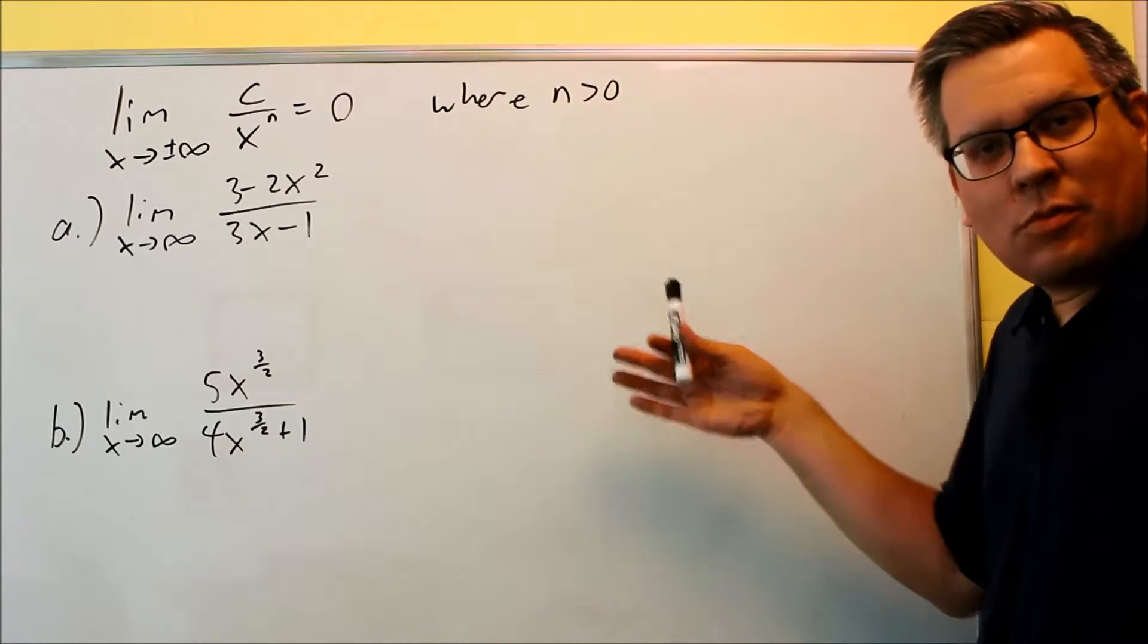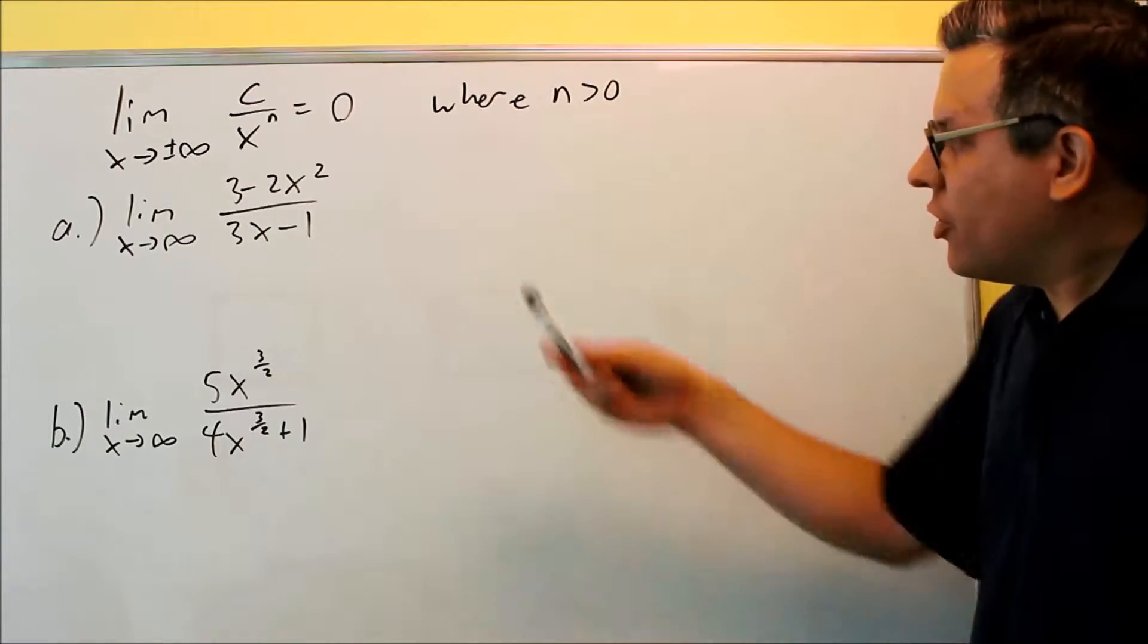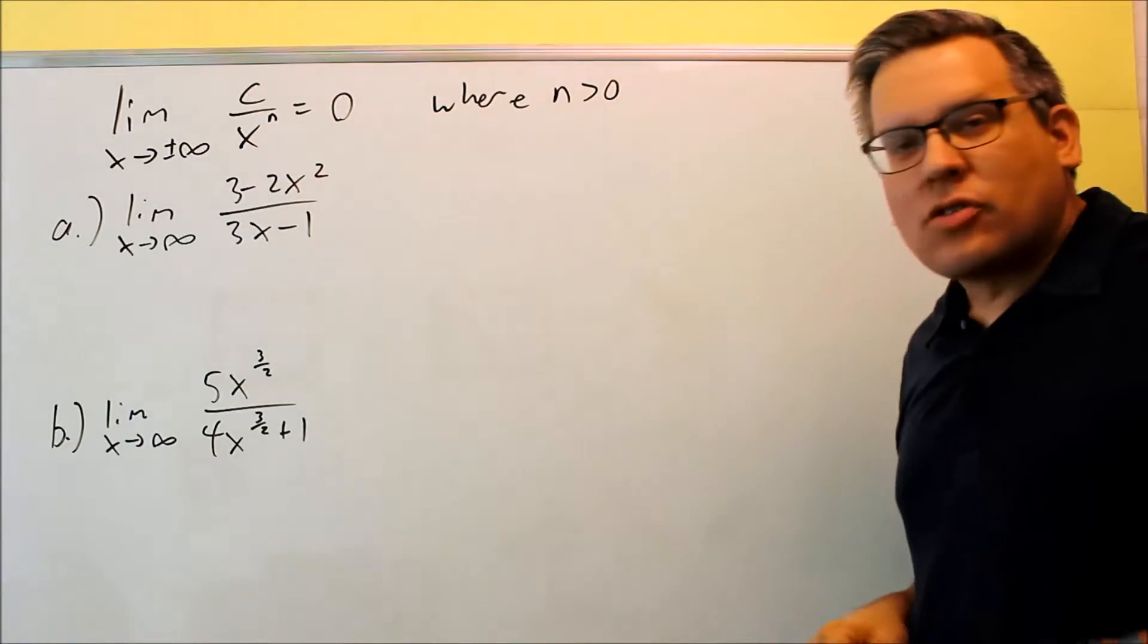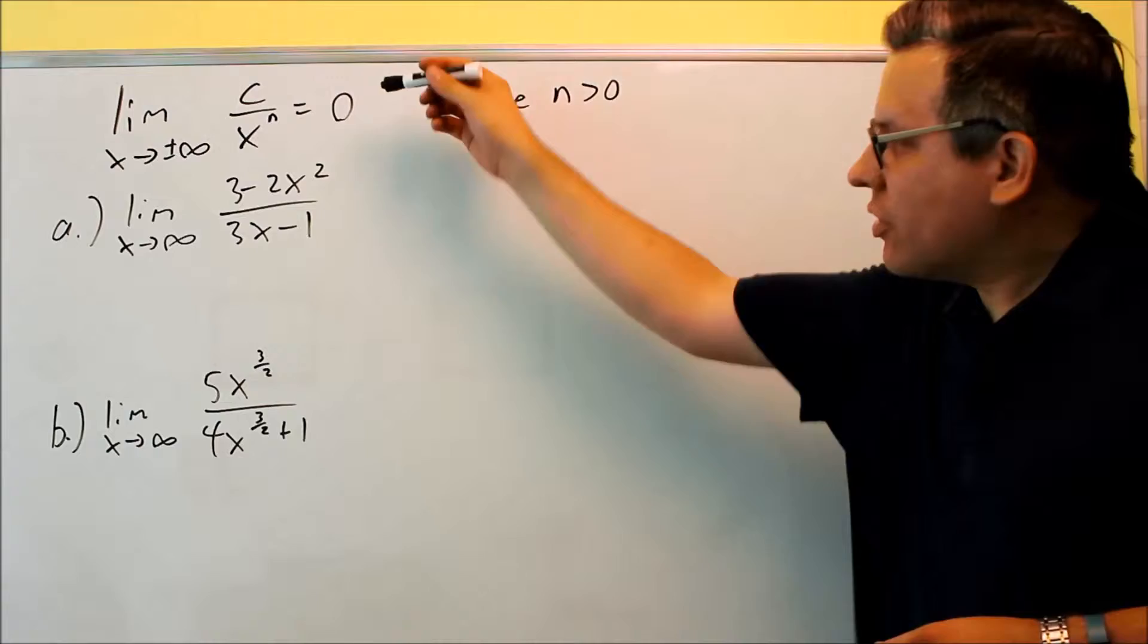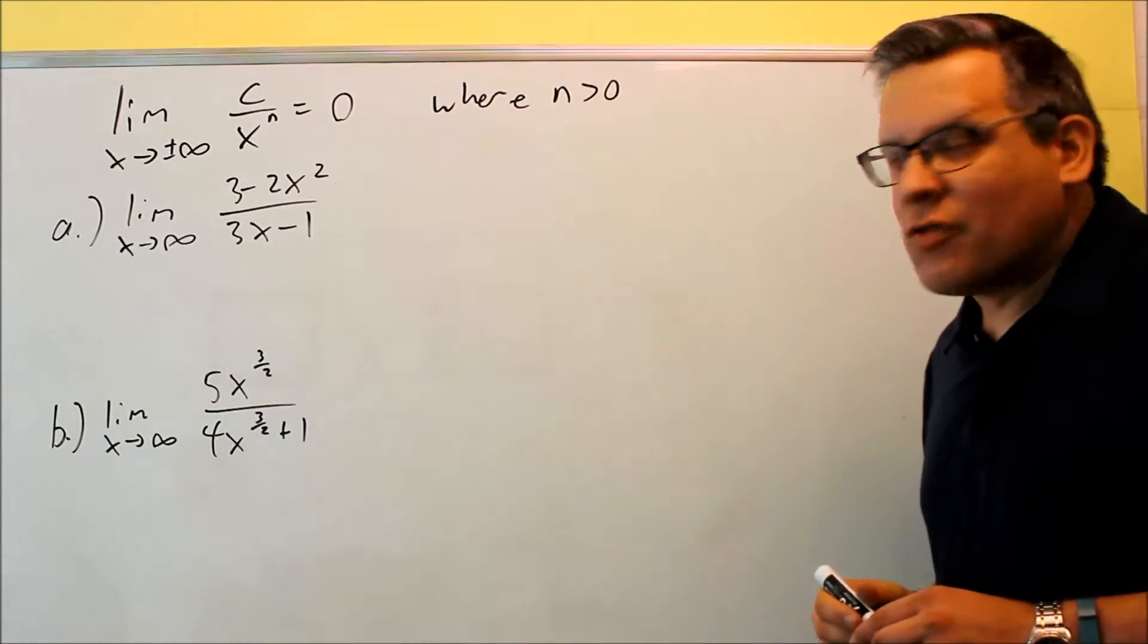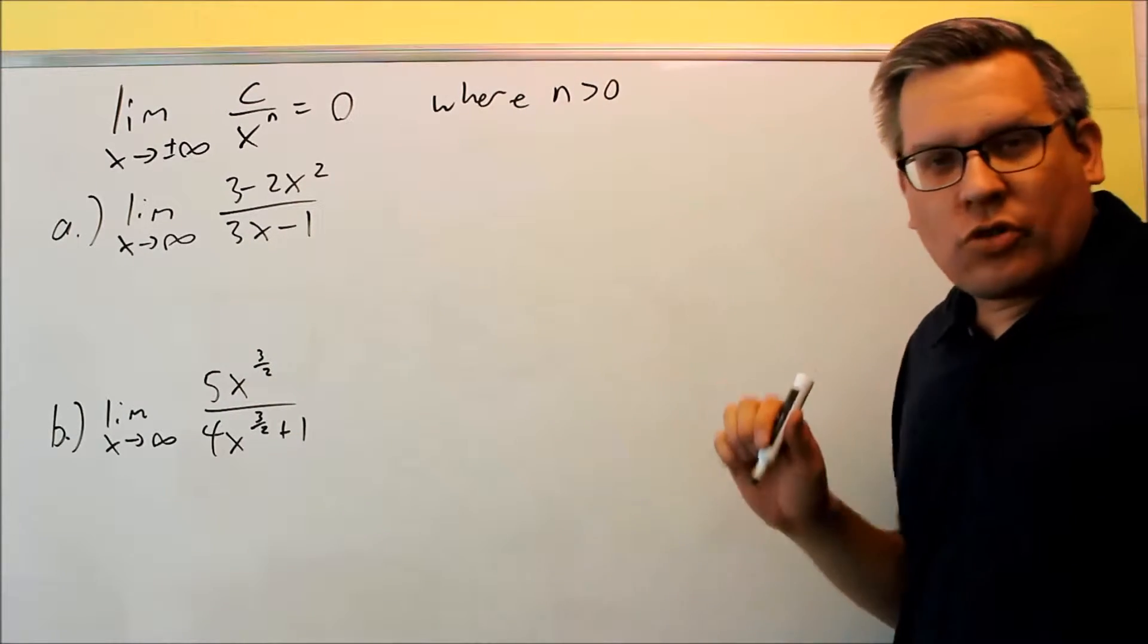All right, for these problems we're doing the same process we did before in the previous video. We're using this property here. So whenever you see a constant over x to the higher power, that's going to go to zero as x goes to plus or minus infinity. Okay, so we're doing the same process here.